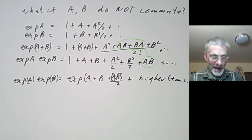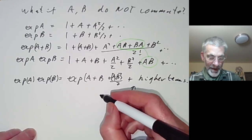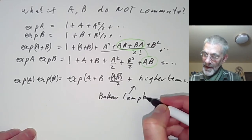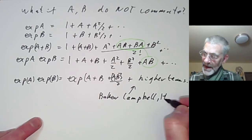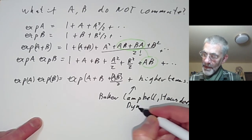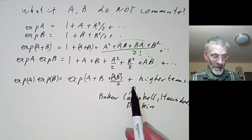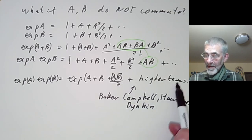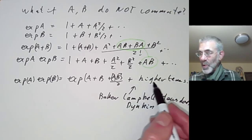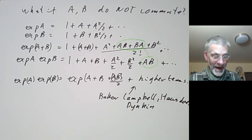You might ask: what are these higher terms? There's actually a formula for them due to Baker — well, actually due to quite a lot of people: the names Baker, Campbell, Hausdorff, and Dynkin. They all contributed quite a lot. I'm going to postpone the discussion of these higher terms to next lecture. It turns out you can write all these higher order terms in terms of the Lie brackets of A and B.